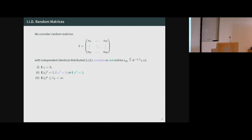The important thing, in contrast to Wigner matrices, is that these entries are truly independent — there is no Hermitian symmetry; X_{1,2} and X_{2,1} are independent. There are normalization conditions: matrix elements have zero expectation and are scaled by 1 over square root of N. This is the normal scaling so that matrix X is an order-1 matrix even as N goes to infinity. The matrix elements are distributed as 1 over square root of N times a model random variable chi, which is an order-1 random variable satisfying two natural normalization conditions, plus some technical moment conditions — basically every moment is finite.